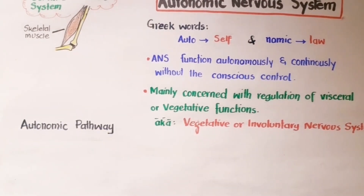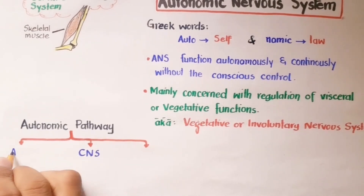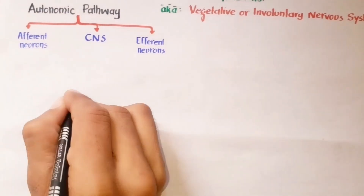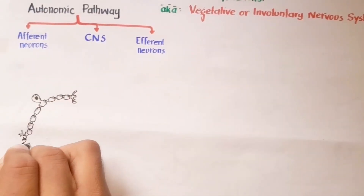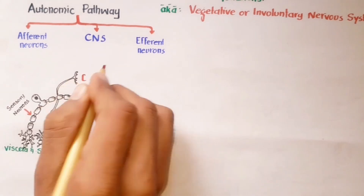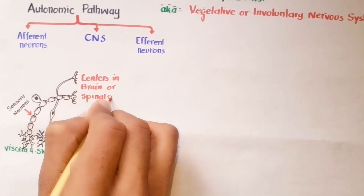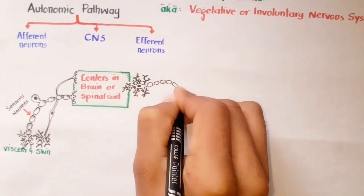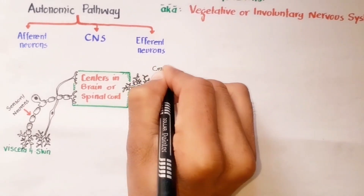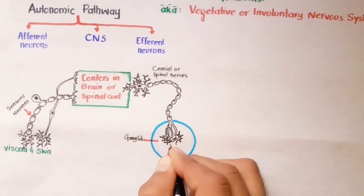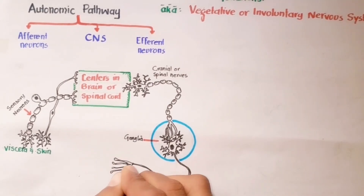The autonomic pathway includes the central nervous system, afferent or sensory neurons, and efferent or motor neurons. The autonomic nervous system is stimulated by sensory neurons which conduct signals to the CNS from receptors in the viscera and in the skin. Axons conduct these signals to centers in the brain or spinal cord. In response, after processing, motor impulses travel out from these centers on axons in cranial and spinal nerves. These axons typically lead to ganglia, where the impulse is handed over to a second neuron which terminates into the target organ.